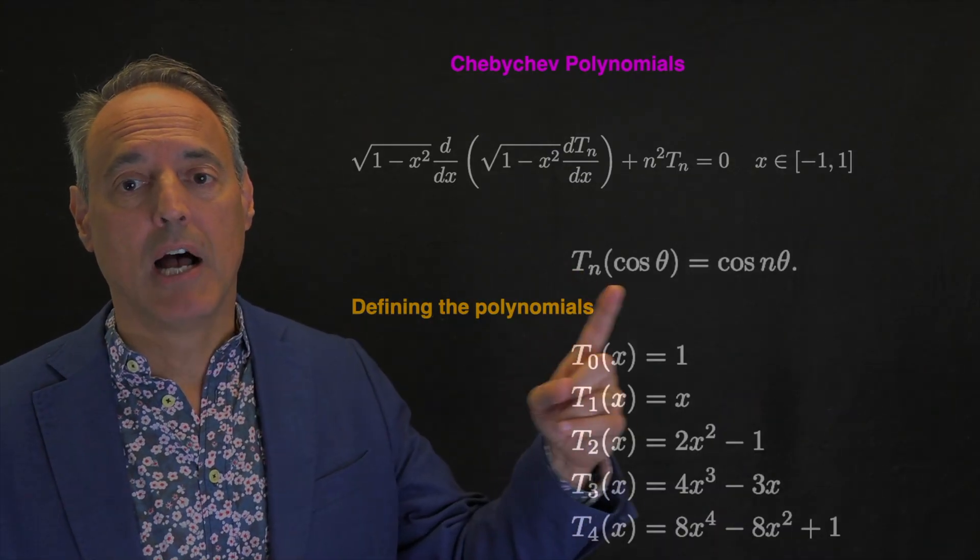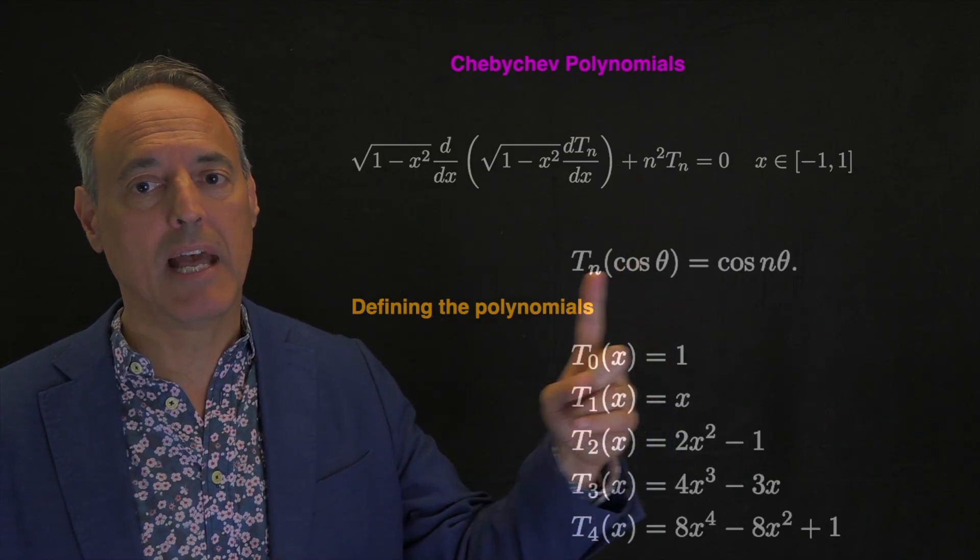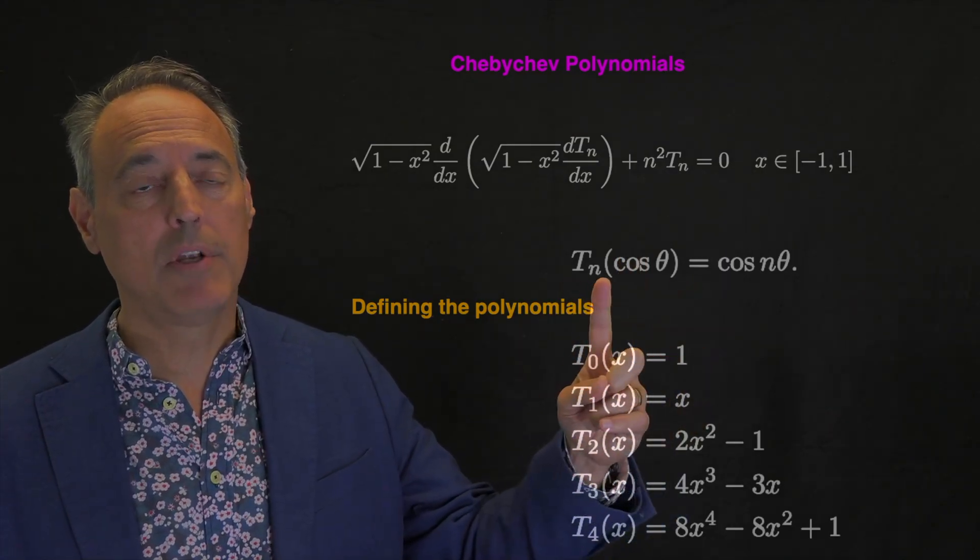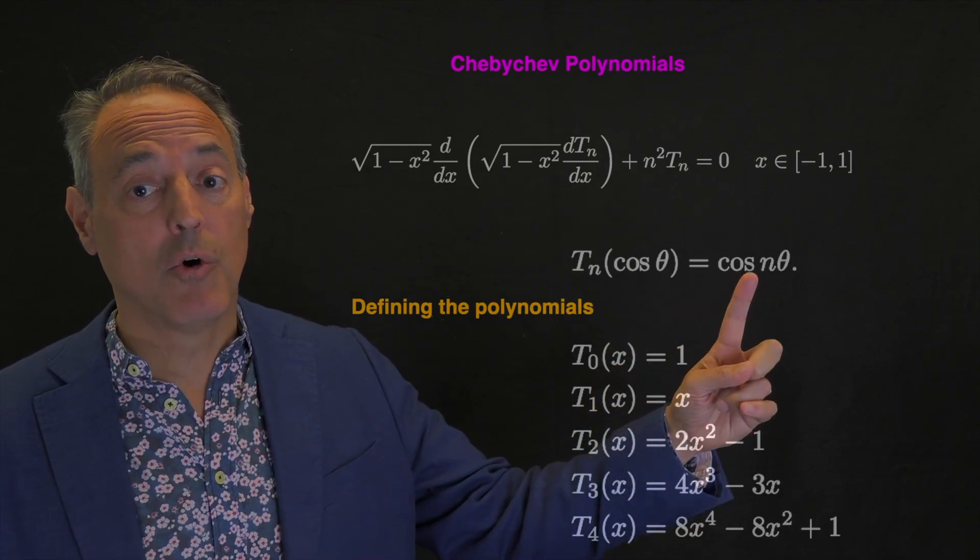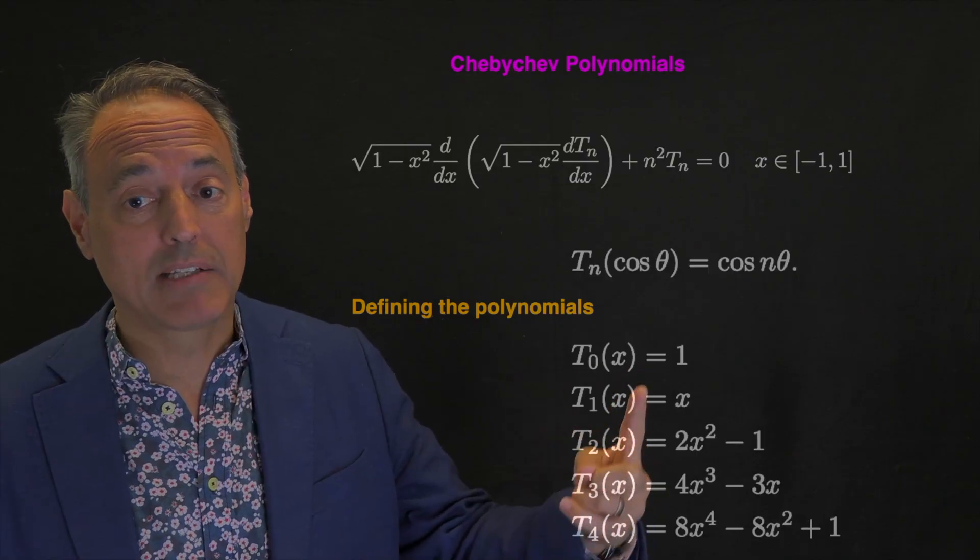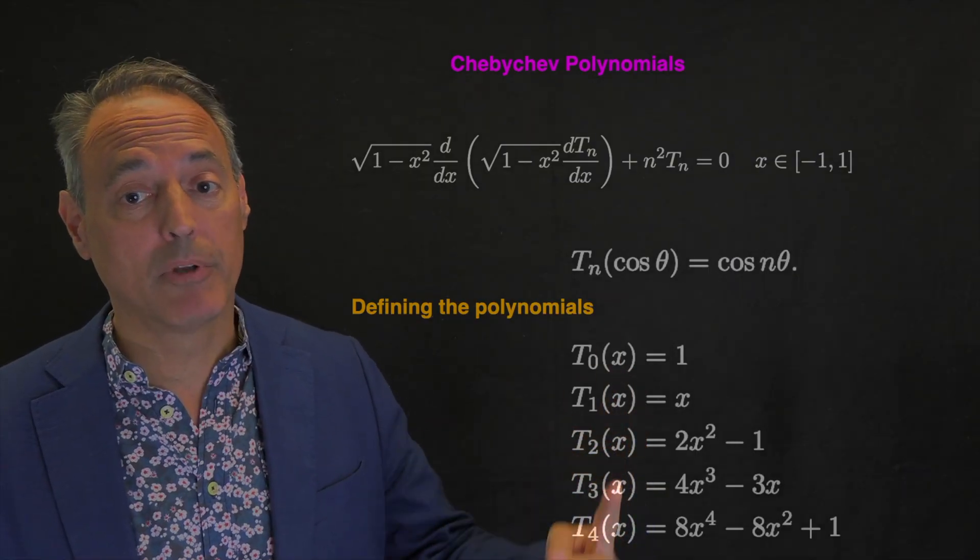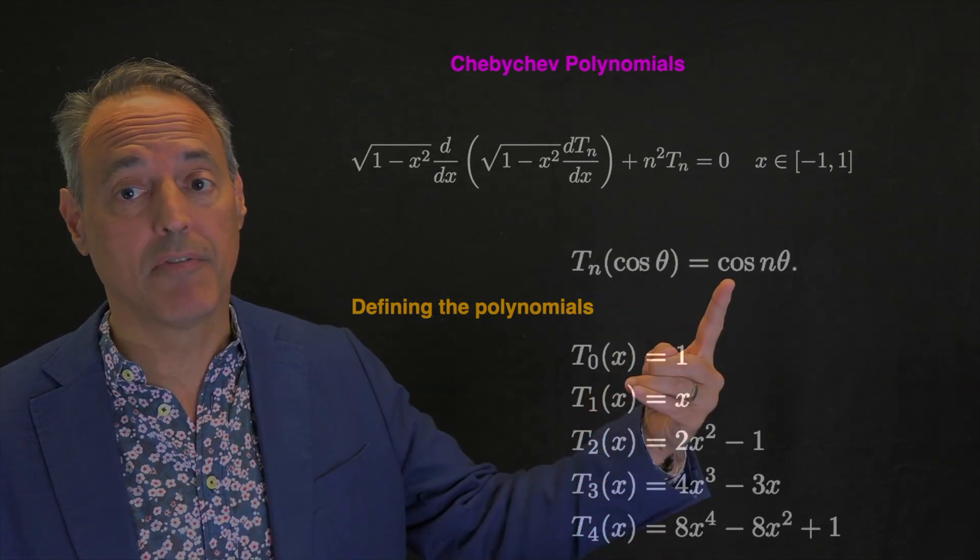Let me show you how we define these polynomials. T_n of x, but I replace x by cosine theta. We define T_n of cosine theta as cosine n theta. If you go through the n's and bring it back to x, here are the polynomials: T_0, T_1, T_2, T_3, T_4. Here's how they're defined.